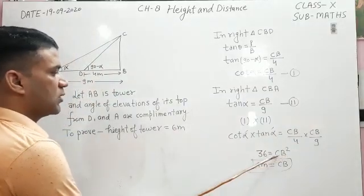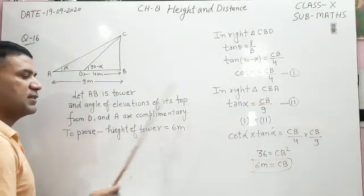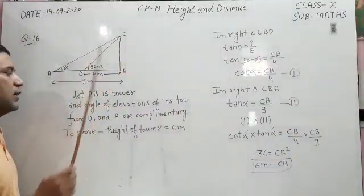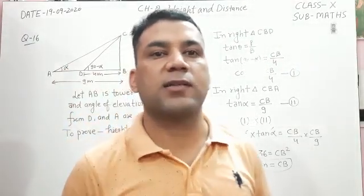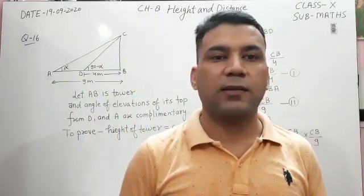CB equals square root of 36, that is 6 meters. Now it is proved that the height of the tower is 6 meters. In our next video we will discuss a new chapter. Thank you students.